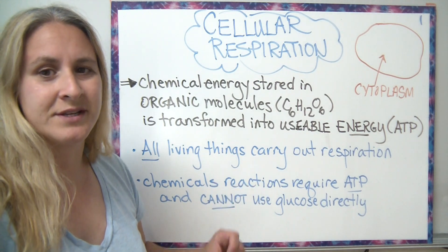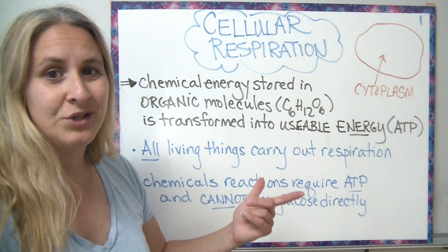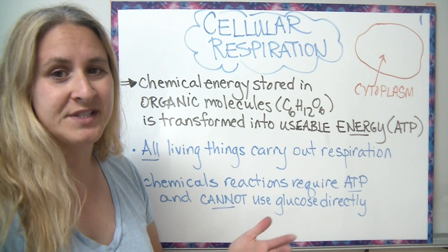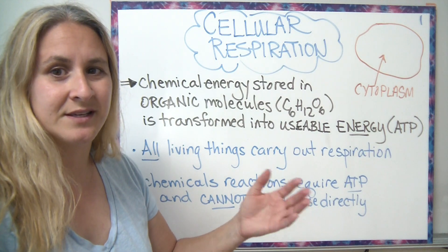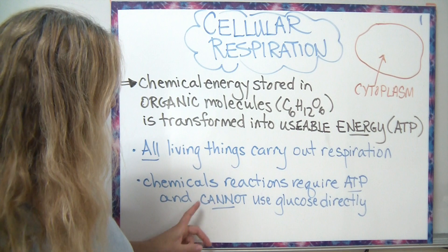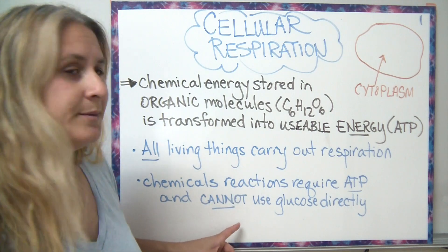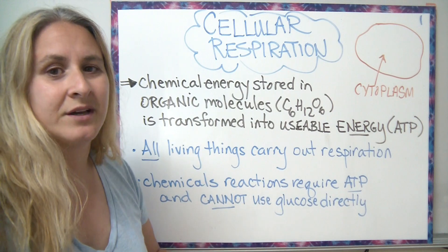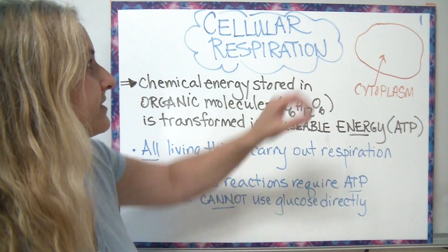Every single living organism will carry out respiration because they all need to get their energy from their food. Even autotrophs have to convert the glucose they make during photosynthesis into a usable form of energy. The chemical reactions require ATP in a living organism and cannot use that glucose directly, so they have to convert it.